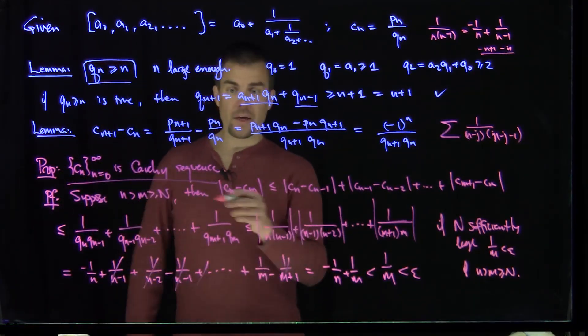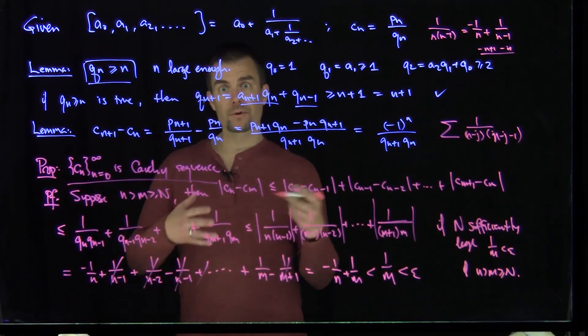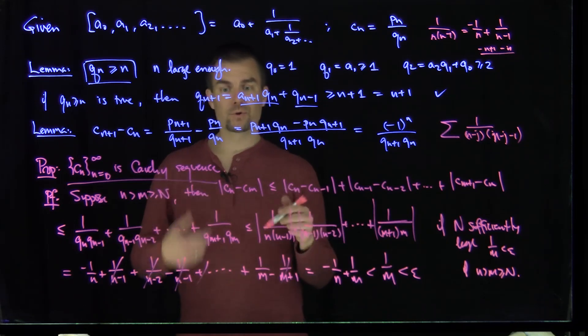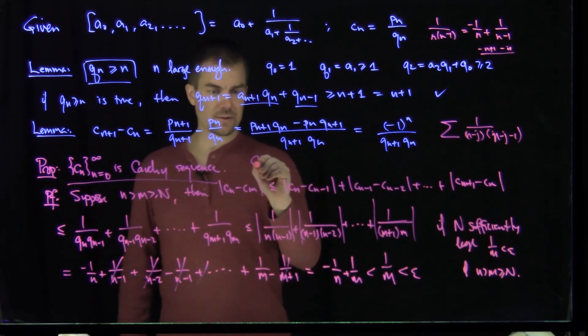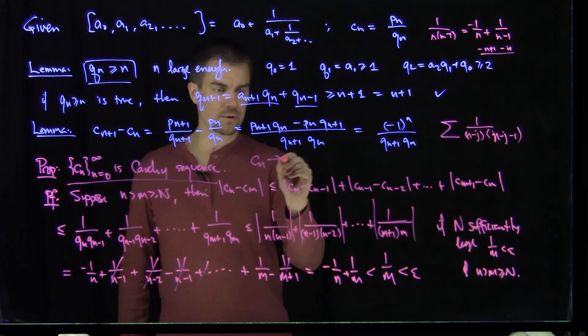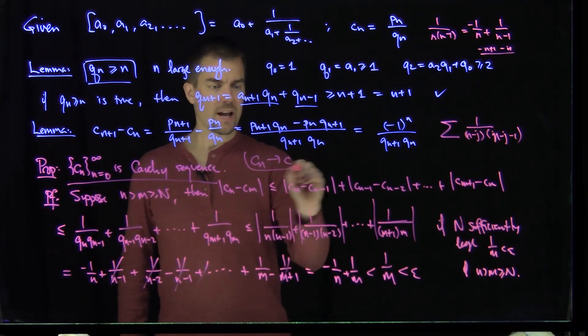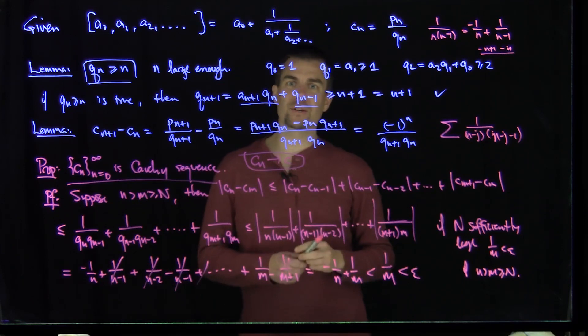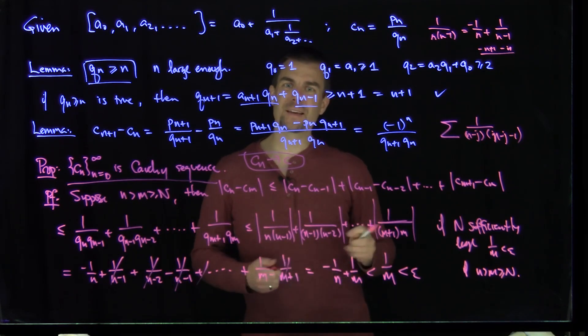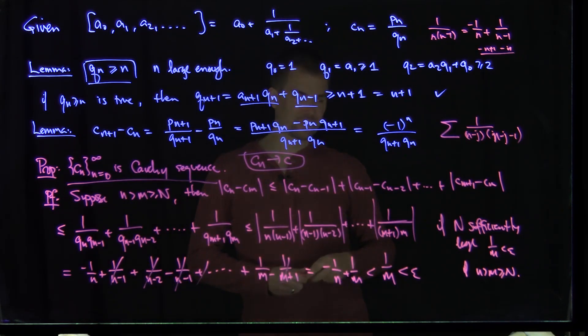Since the sequence of convergents is Cauchy, it must converge to a real number. Hence cn converges to a number c, and the infinite continued fraction converges. Thank you very much.